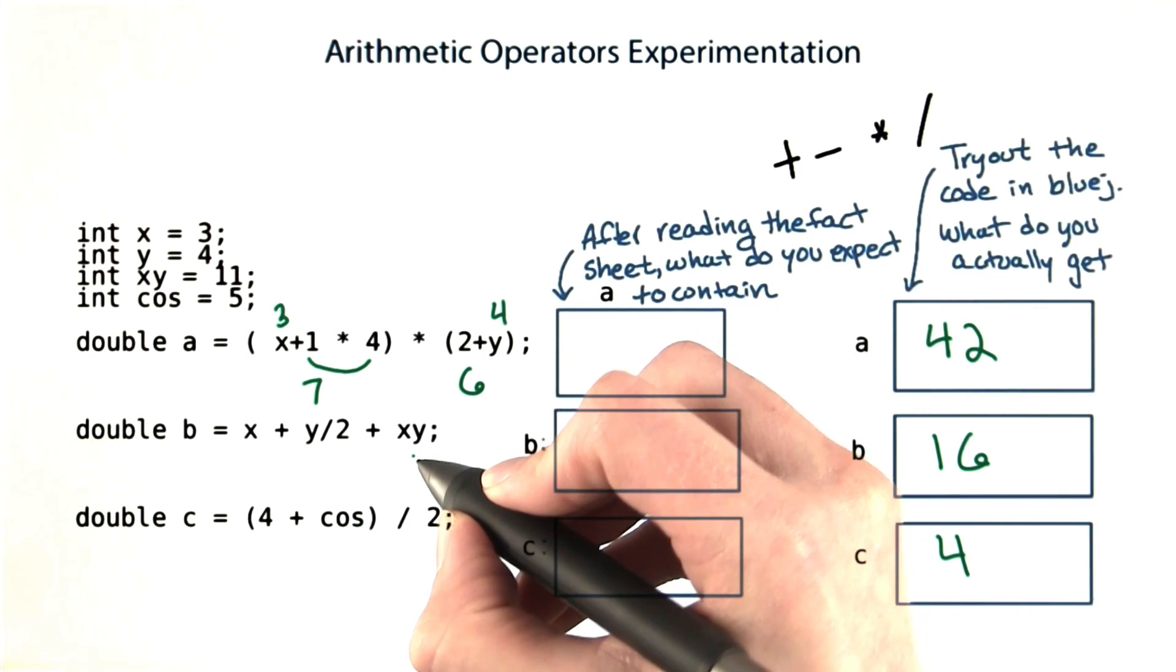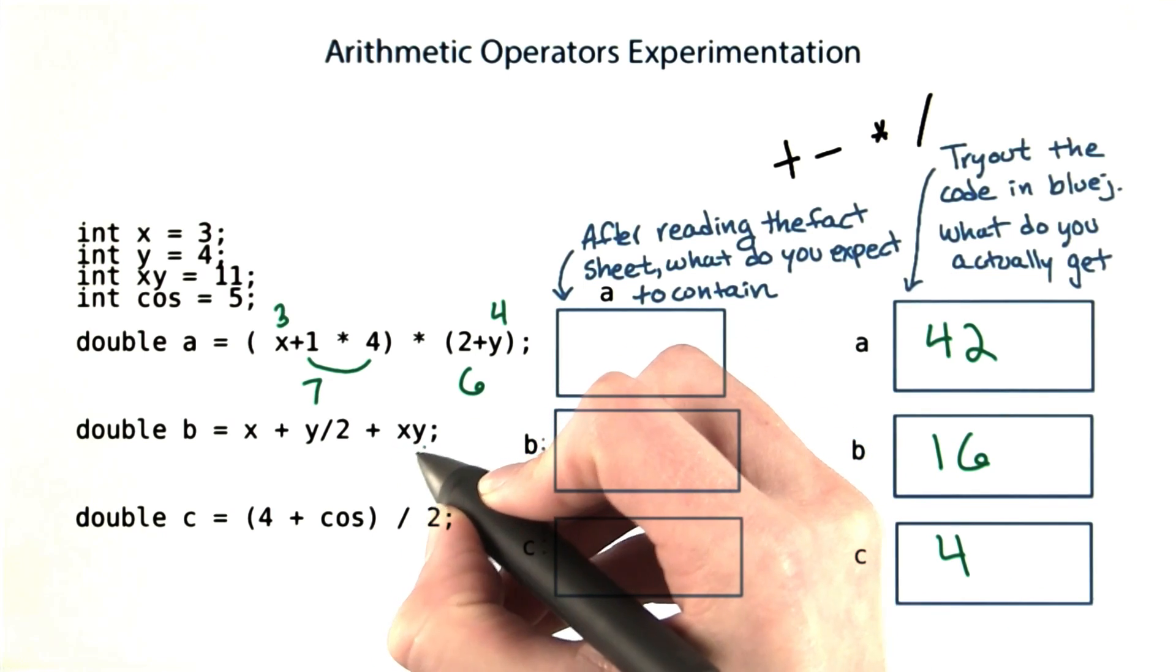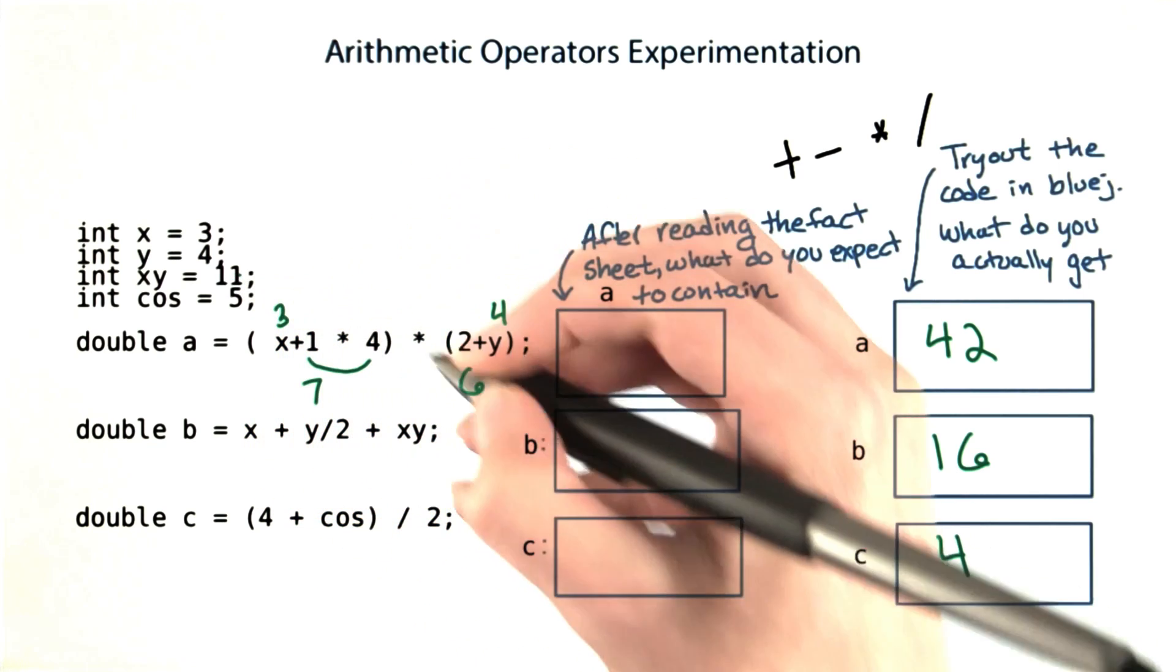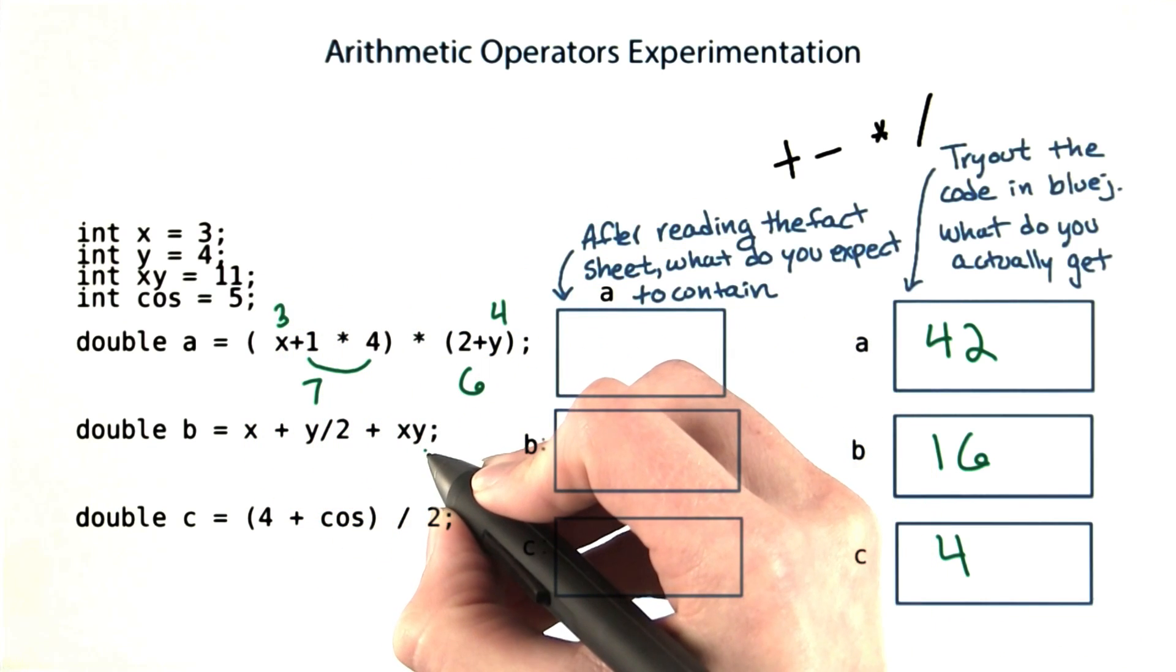It's possible that your algebra sense took over here, and you read xy as x times y. But it should actually be 11, because xy is a variable.